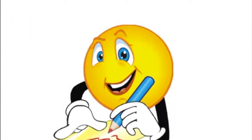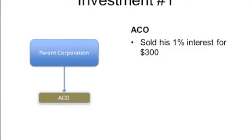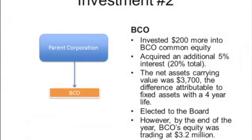With the first year behind, Bob looked forward to the second year with great anticipation. But the markets were volatile, the economy was fragile, and equity investors were being punished everywhere. Bob was not immune to the downturn. Early in the year, P-Co sold its interest in A-Co for $300,000, which is the same as its original cost a year earlier. P-Co used $200,000 of the A-Co proceeds to increase its stake in B-Co to 20% from the 15% it held previously. At the time of this further investment, the net asset value of B-Co was $3.7 million, with any difference attributable to fixed assets with a four-year remaining life. With this further investment, P-Co was able to get Bob elected to the board of directors of B-Co, enabling P-Co to exert significant influence over the operating, investing, and financing decisions of B-Co.